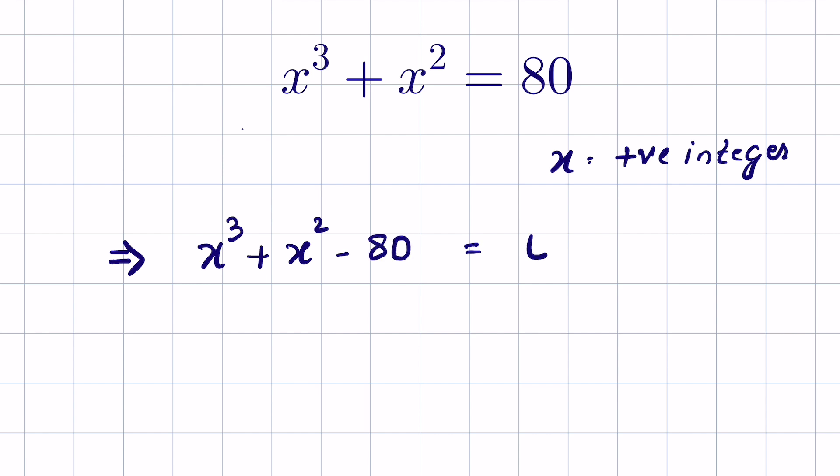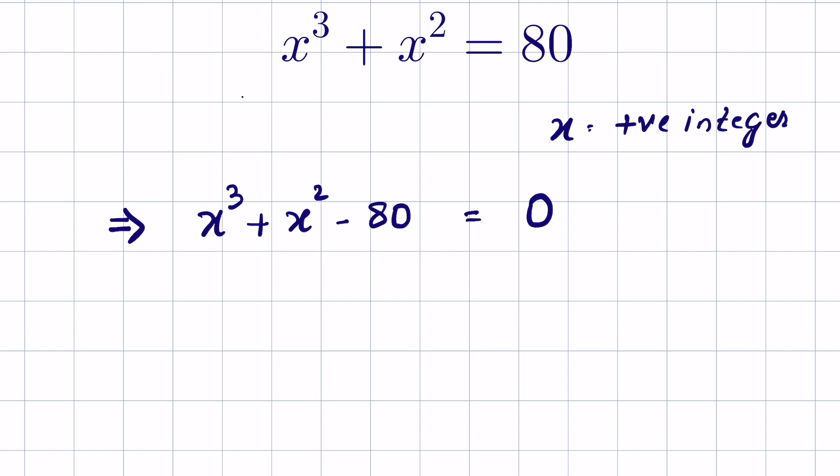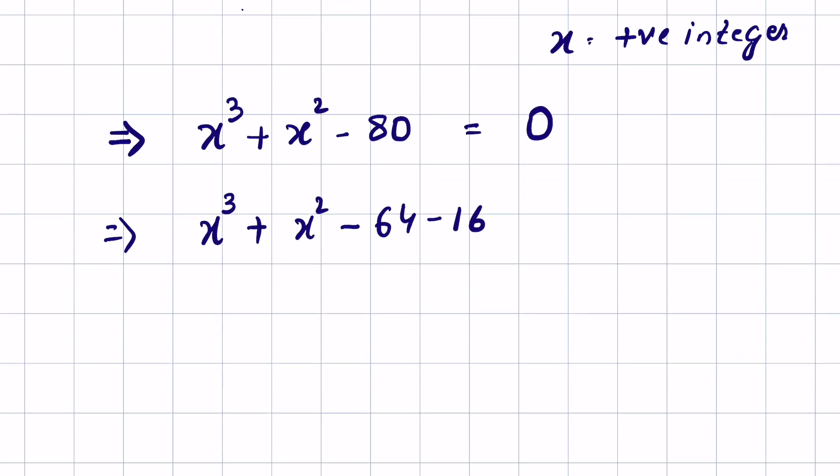Now this is an equation in which we have cube and square terms. To resolve this, let's break down 80 into two terms. We can write 80 as 64 + 16, so -80 becomes -64 - 16.